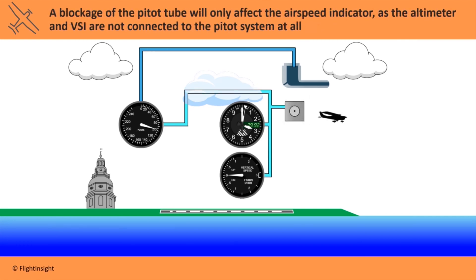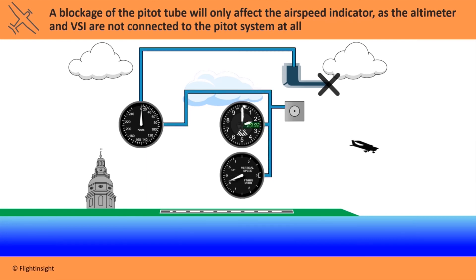A blockage in the pitot tube will only affect the airspeed indicator, as this is the only instrument fed by this system. A loss of ram air pressure from the blockage in the front will cause the pressure in both the pitot and static system to be equal, causing the airspeed indicator to read zero, though the altimeter and VSI will continue to function normally.